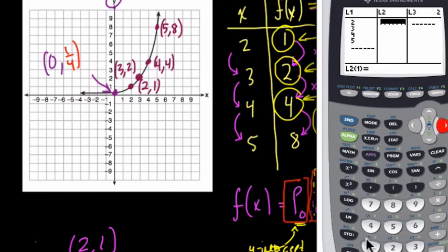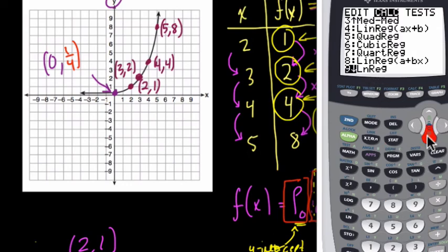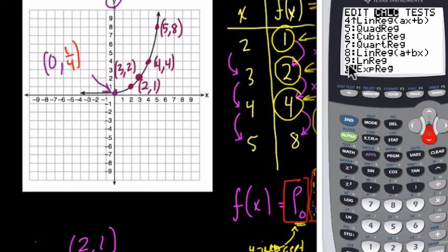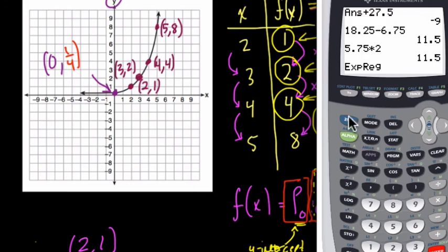And then here we can enter the outputs: 1, and 2, and 4, and 8. And then we're basically done, because if we go back to STAT, and if you go down under CALC, under 0, you see ExpReg. This means drawing an exponential function that best represents the data you're given. In this case, if we hit ENTER, and then select the two lists. Second, 1, comma, list 2. Those are our x and y's. We just entered them in those lists. Hit ENTER.